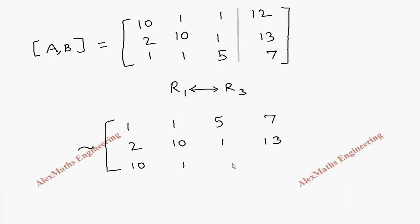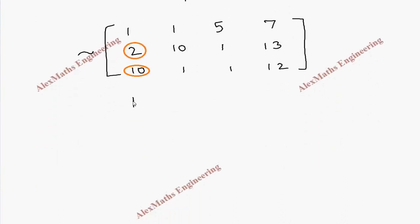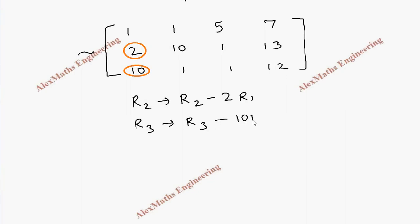Now we have to make this a diagonal matrix. First, I have to make these two elements zero. For this I have to take R2 as R2 minus 2·R1, and R3 as R3 minus 10·R1.